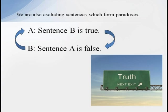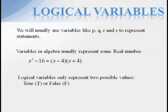The same type of self-reference occurs indirectly here also. We usually represent valid statements with lowercase variables like p, q, r, and s. We're used to variables in algebra, which typically represent any real number. But a logical variable can only have two values, true or false.